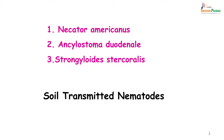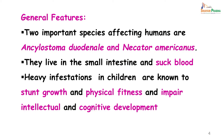All three worms are basically soil-transmitted nematodes. The two important species affecting humans are Ankylostoma duodenale and Necator americanus. They live in the small intestine and suck the host's blood. Heavy infestation in children is known to stunt their growth, reduce physical fitness, and impair intellectual and cognitive development.